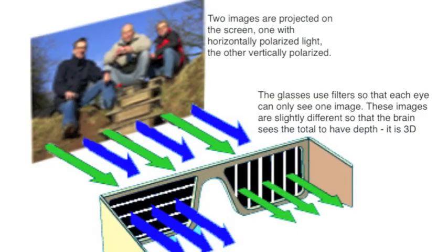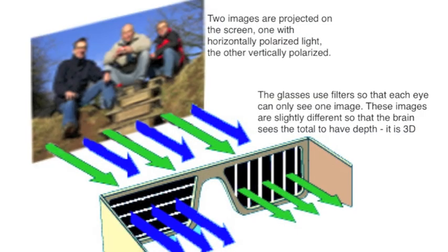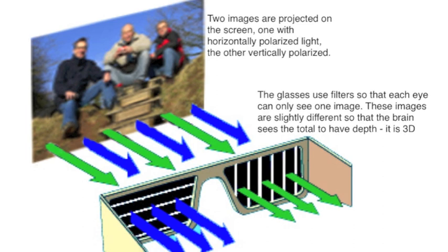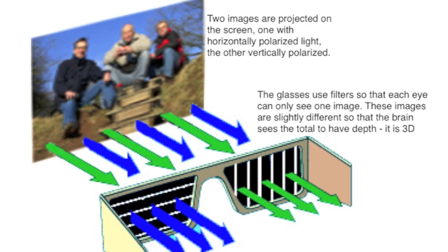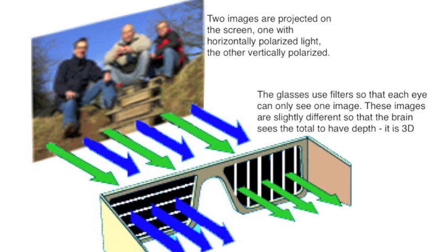The final application of Polaroid filters, which I'm explaining here, is in the viewing of 3D images. In a 3D picture, in the cinema screen for example, two images are projected onto the screen.